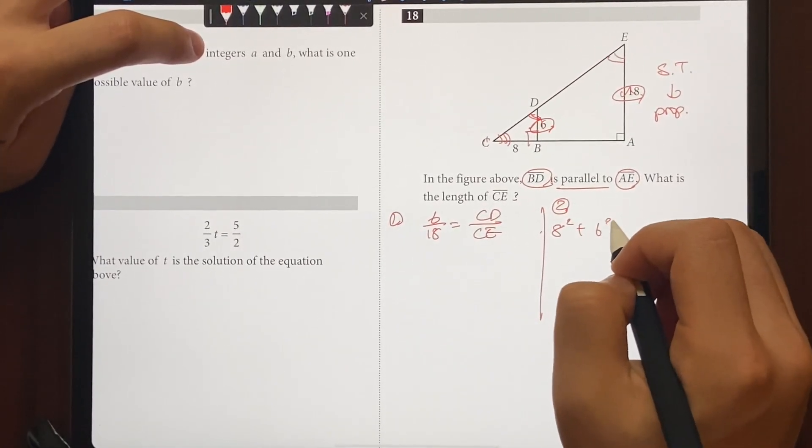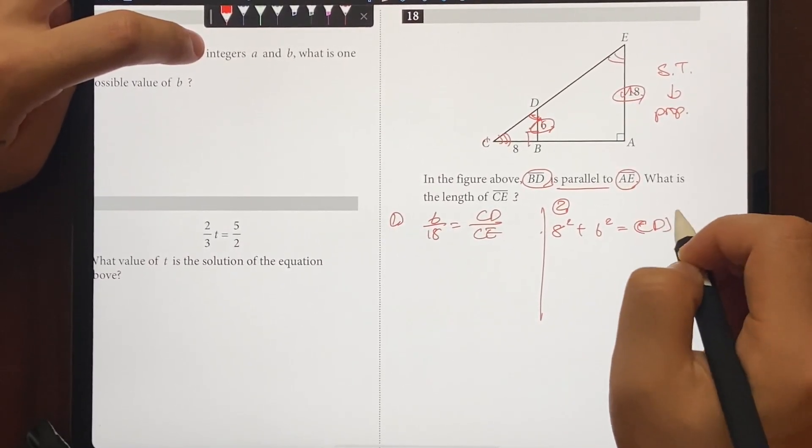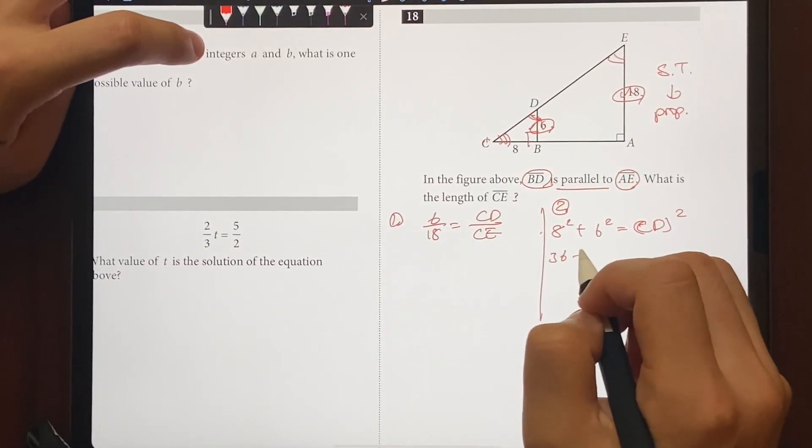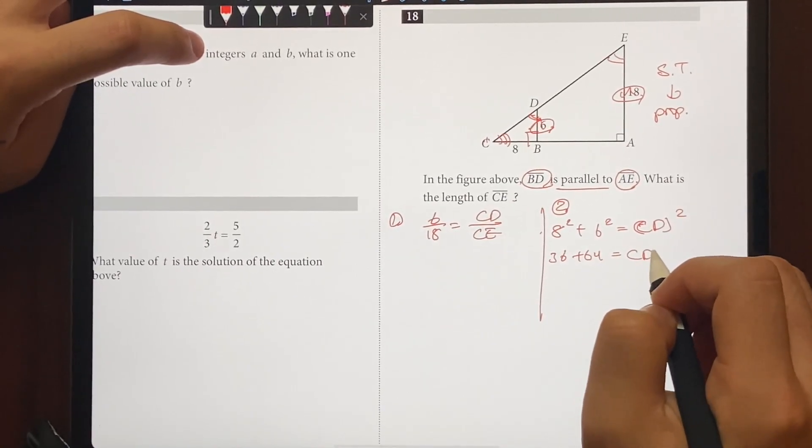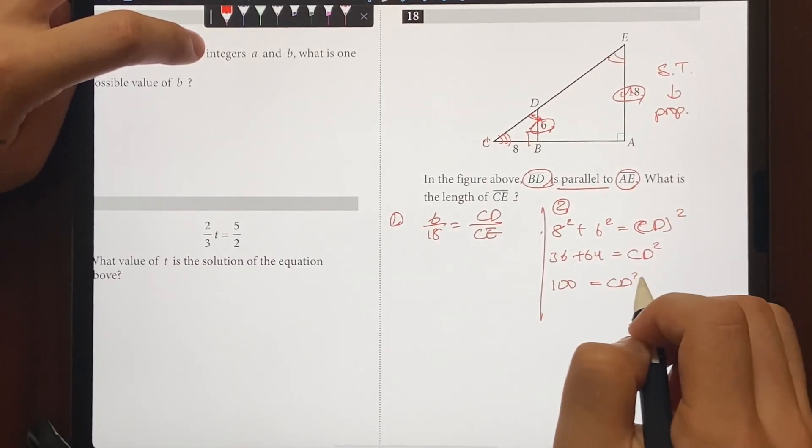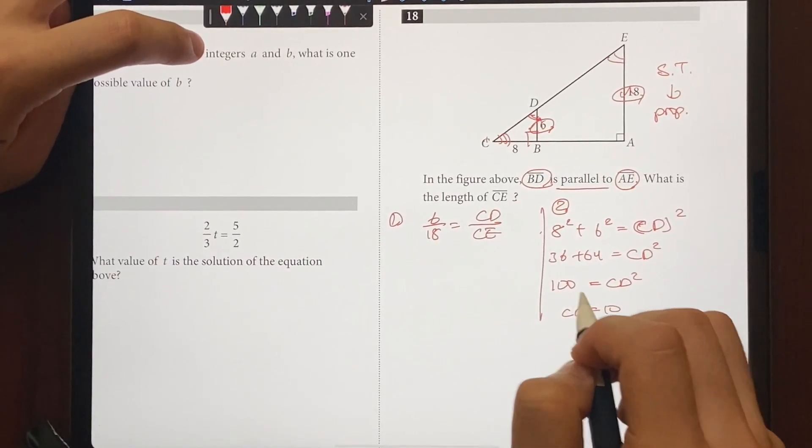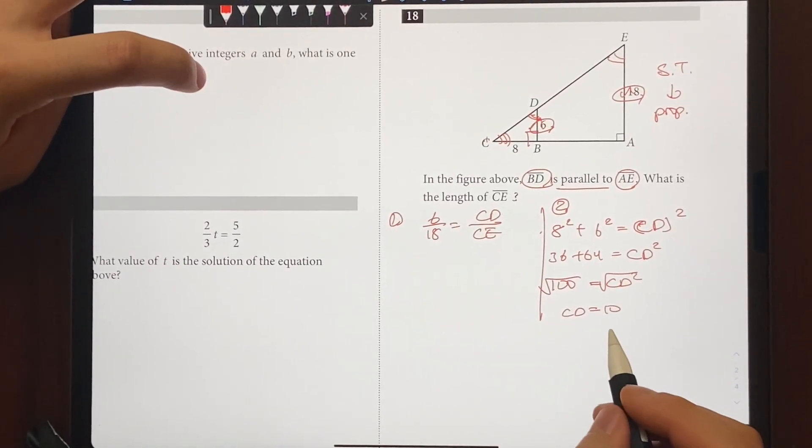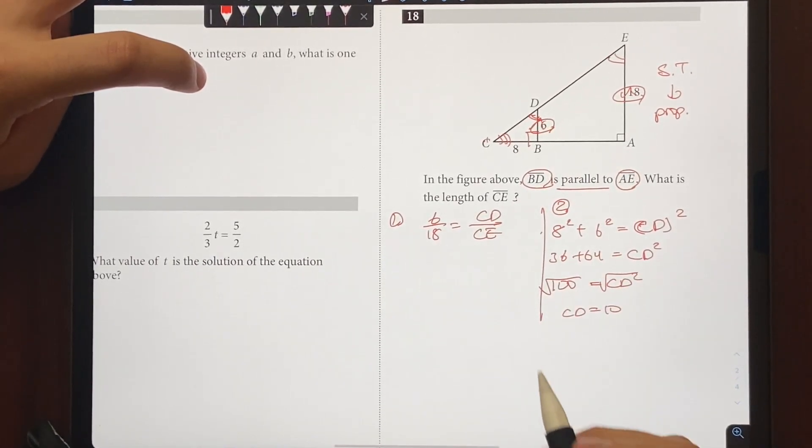8 squared plus 6 squared is equal to CD squared, which is going to be 36 plus 64 is equal to CD squared. And if we add them up, it's going to be 100 equals CD squared. CD is equal to 10 by square rooting both sides.